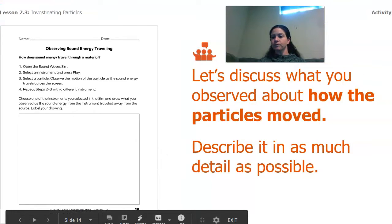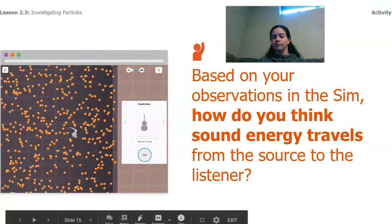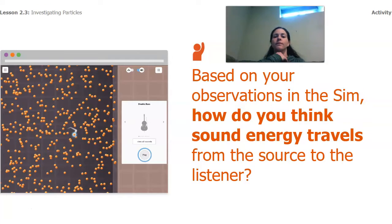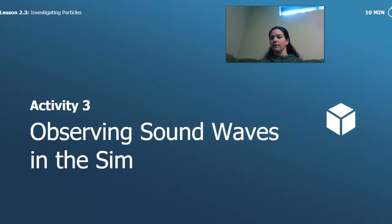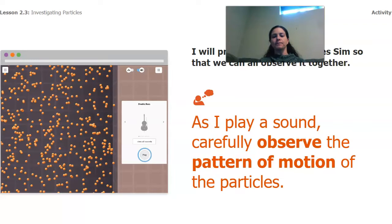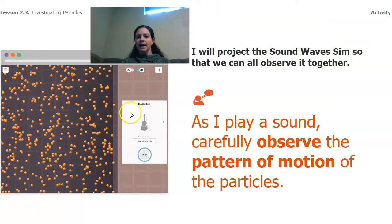Now, based on our observations of the sim, how do you think sound energy travels from the source, like the drum, to the listener, like let's say our ear was over here? How is that sound getting from the drum to our ear? We're going to look one more time at the sim.